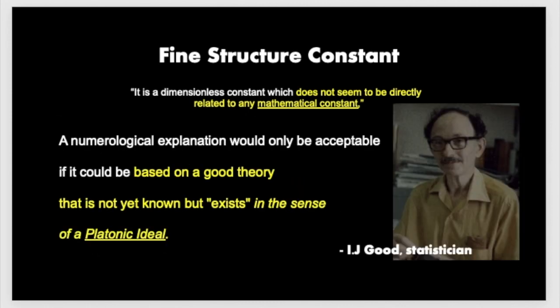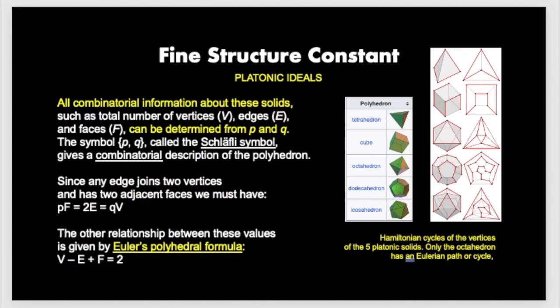The other quote that I wanted to bring up is that I.J. Good said, a numerical explanation would only be acceptable if it could be based on a good theory that is not yet known, but exists in the sense of a platonic ideal. And that's exactly what I'm going to show you here,